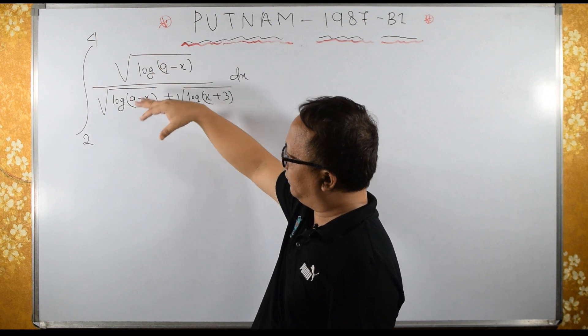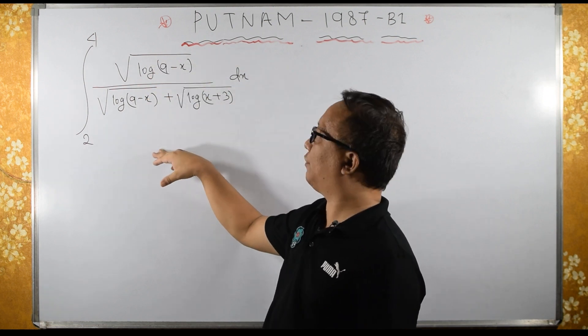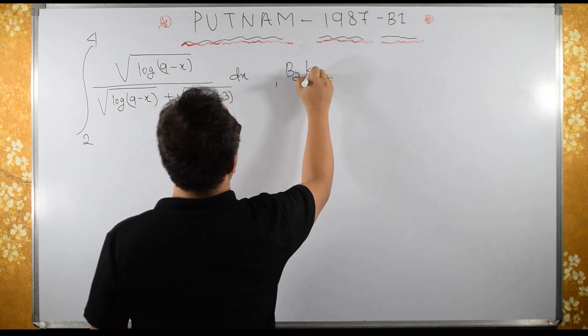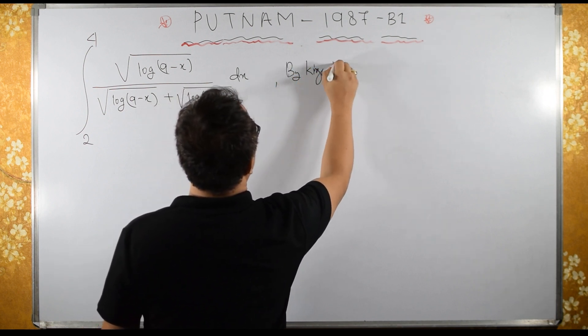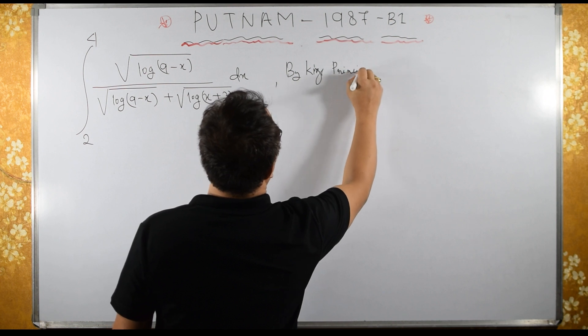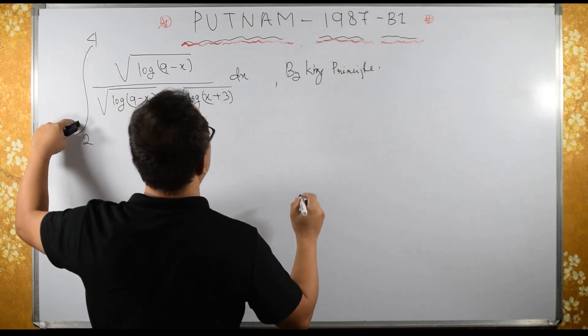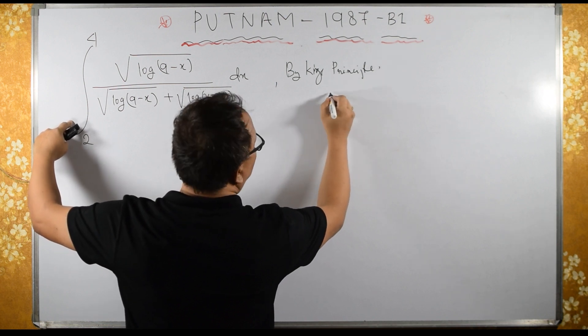This integral, we can apply King's Principle. Let us apply King's Principle. By King's Principle, what we have here: 4 plus 2 is 6, 6 minus x.